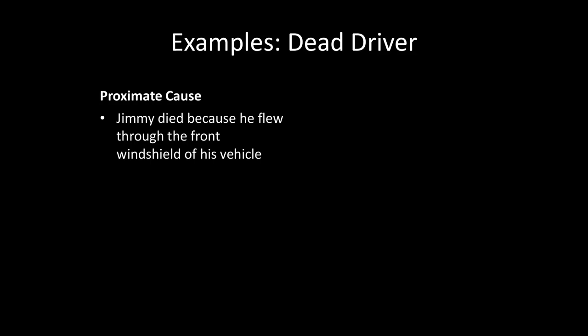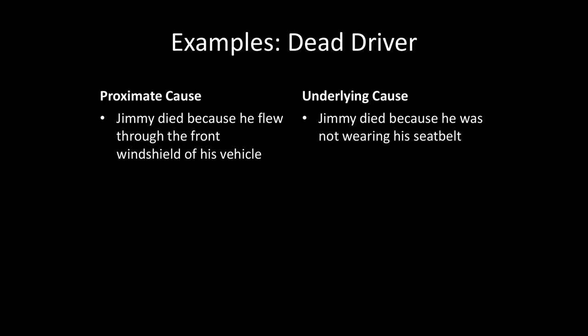Let's go through a few examples of proximate and underlying causes. We'll begin with a dead driver. The proximate cause of Jimmy's death is that he flew through the front windshield of his vehicle. The underlying cause of Jimmy's death is that he was not wearing a seatbelt. Both of these are causal relationships. If Jimmy had not flown through the windshield and smashed his face against the pavement, he would not have died. But it's also true that had Jimmy been wearing his seatbelt, he would not have flown through the windshield and would not have died.